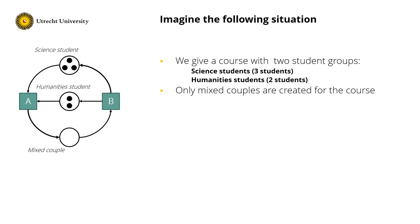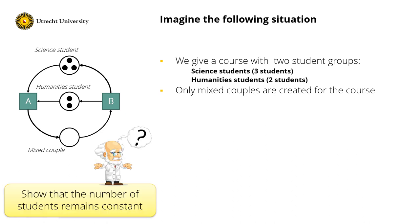But now the question is: show that the number of students remains constant. The only tool I currently have in my toolbox is the reachability graph, so let's create a reachability graph.